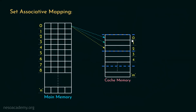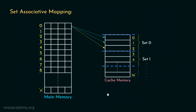Set associative mapping becomes flexible because the organization provides multiple mapping options. The sets are numbered as set 0, set 1, and so on. Based on how many lines are in every set — because all sets are of equal size — the way is specified. That means if one set contains k number of lines, we call it a k-way set associative cache. This concept is borrowed from the direct mapping policy.